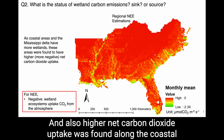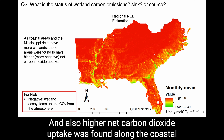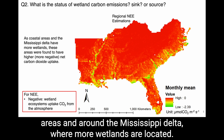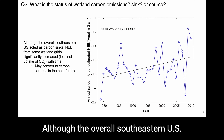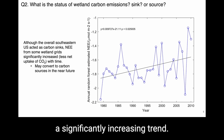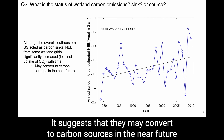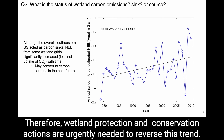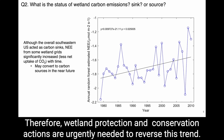Higher net carbon dioxide uptake was found along the coastal areas and around the Mississippi Delta, where more wetlands are located. Although the overall southeastern U.S. acts as a carbon sink, NEE from some wetland grids was detected to have a significantly increasing trend, suggesting they may convert to carbon sources in the near future in response to climate change. Therefore, wetland protection and conservation actions are urgently needed to reverse this trend.